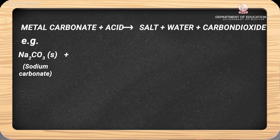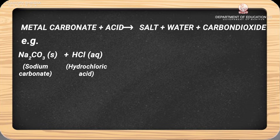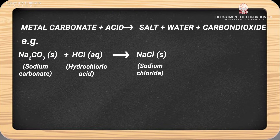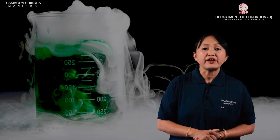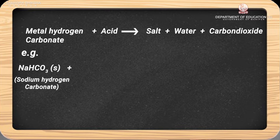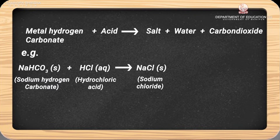For example, sodium carbonate reacts with hydrochloric acid (formula HCl) to form sodium chloride (formula NaCl) along with water and carbon dioxide gas. Similarly, sodium hydrogen carbonate — also called metal bicarbonate — reacts with hydrochloric acid, again forming sodium chloride along with water and carbon dioxide.